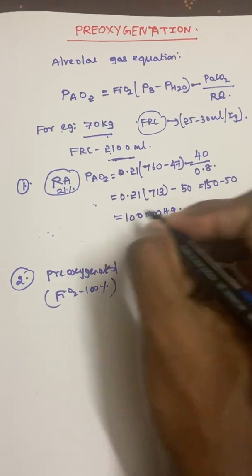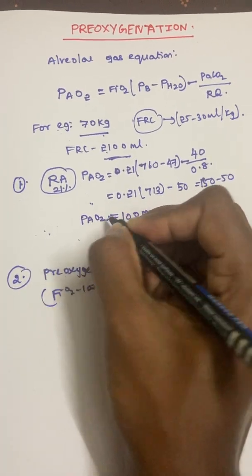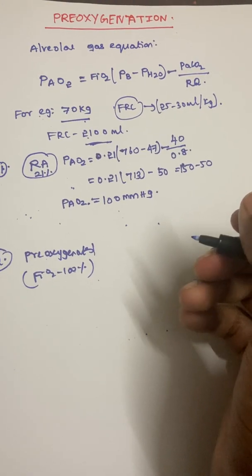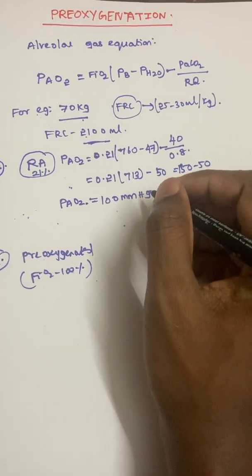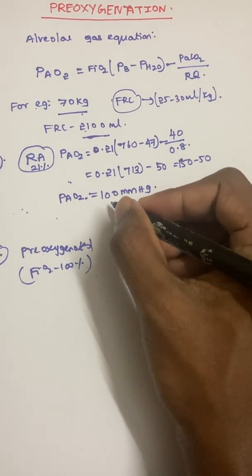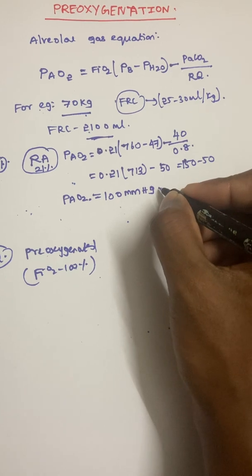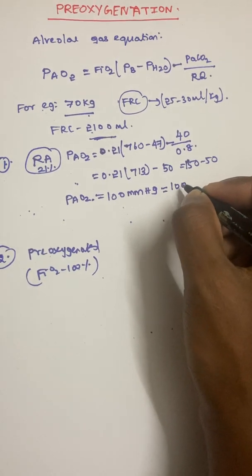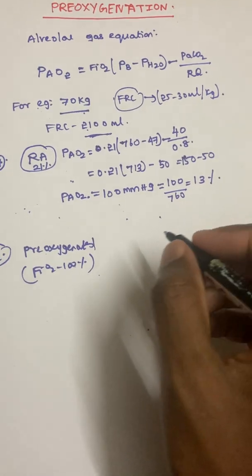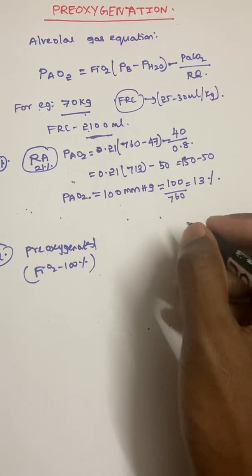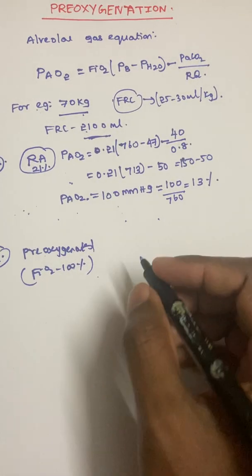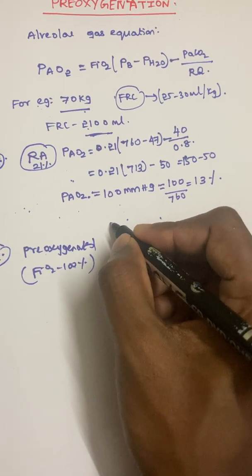We need to know how much oxygen this represents as a percentage of atmospheric pressure. PAO2 is 100 mmHg and atmospheric pressure is 760 mmHg, so alveolar O2 contributes approximately 13% of the alveolar gas with regard to atmospheric pressure when breathing room air.